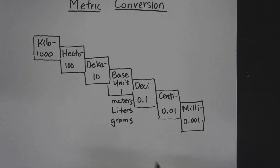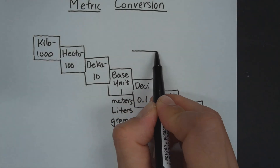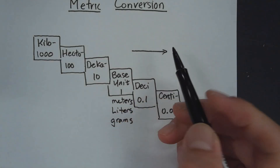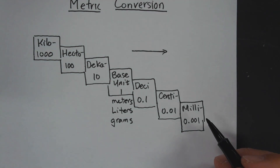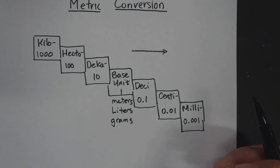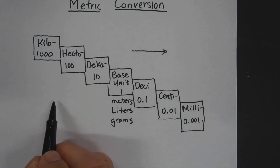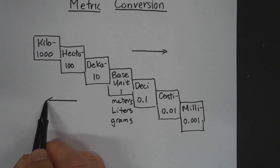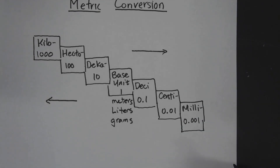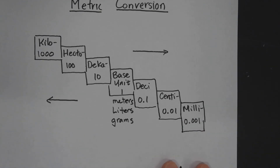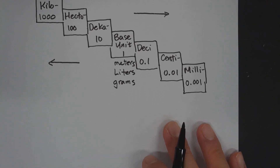When you are going towards the right, we're going to move the decimal to the right — the numbers and units will be smaller. If you're moving to the left to larger units, then you're going to move the decimal to the left. So let's take a look at some examples.